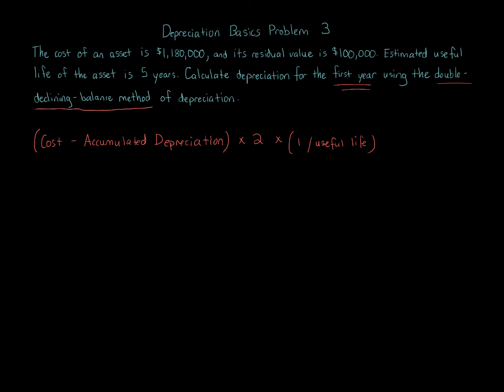Cost minus accumulated depreciation is what we call the book value, or net book value, of the fixed asset — the property, plant, and equipment. Because it's double declining balance, we multiply by two. Double declining balance is double the straight-line rate, so one over the useful life would be the straight-line rate. Doubling that rate gives us the double declining balance rate.